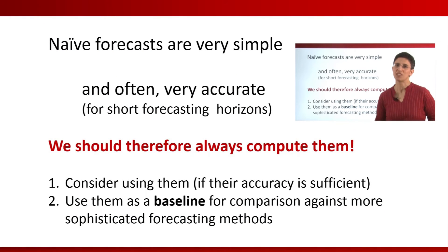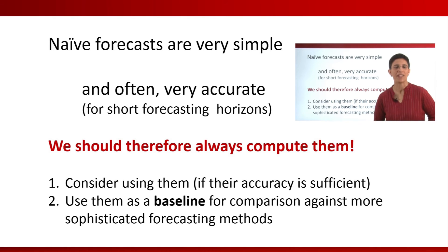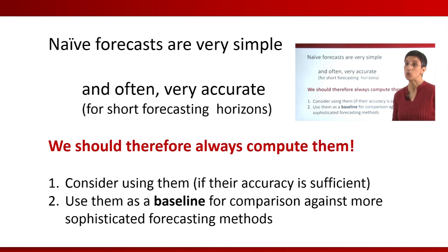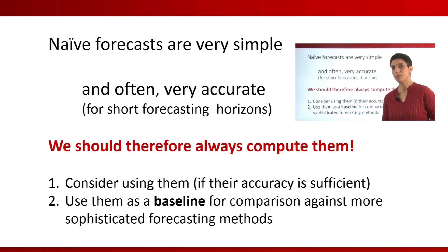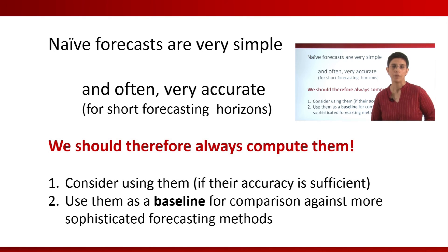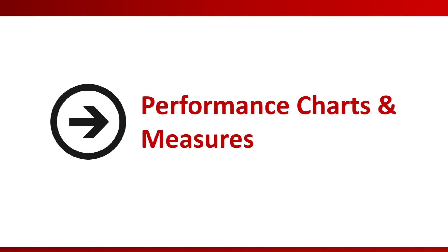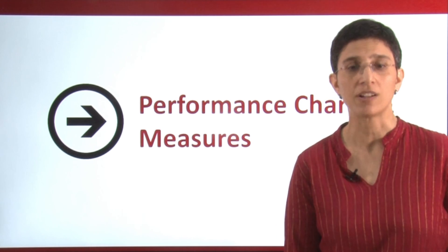Naive forecasts are very simple to generate, very computationally cheap and understandable. And often, surprisingly often, they are very accurate — they are hard to beat with more complicated methods. So we definitely need to consider them as a possible forecaster. And even if we don't use them, we should keep them as a benchmark so that we can measure how much better a more complicated method can actually perform. Those are the two uses for naive forecasts. In the next video, we'll talk about performance charts and performance measures.